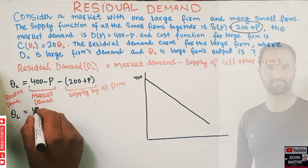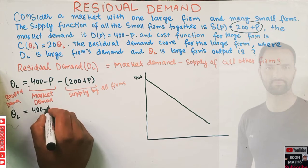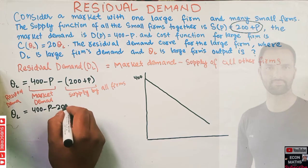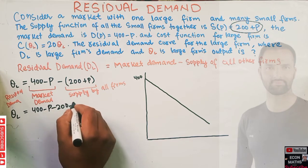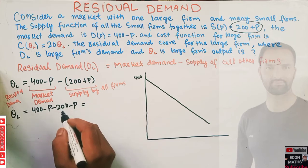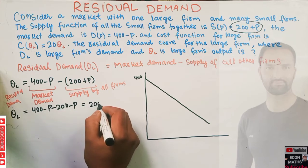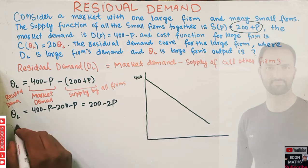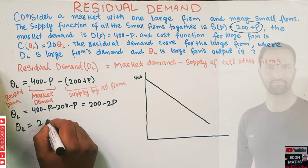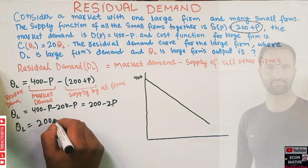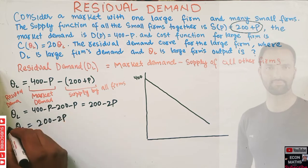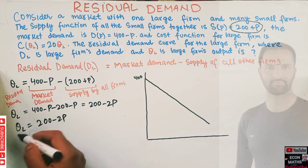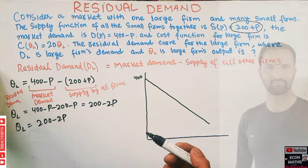Solving this: Q_L = 400 − P − 200 − P = 200 − 2P. So the residual demand for the large firm is Q_L = 200 − 2P.